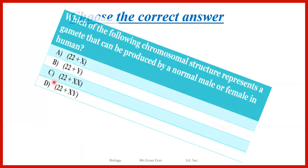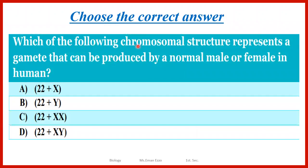The next question: which of the following chromosomal structures represents a gamete that can be produced by a normal male or female in human? Here we have the gametes. Let's look at them one by one: 22 + X — that's 23 chromosomes, so this is a normal gamete. 22 + Y — that's also 23 chromosomes, so this is also a normal gamete.